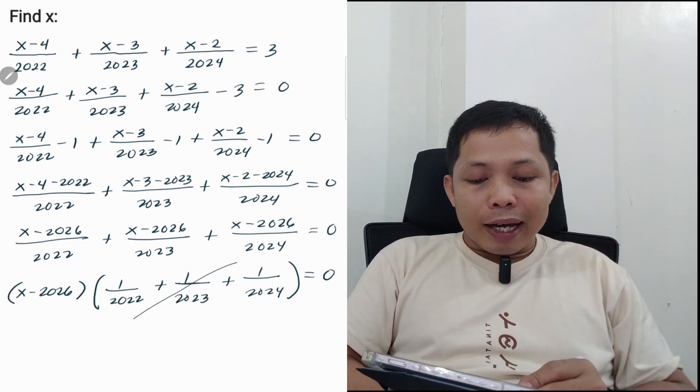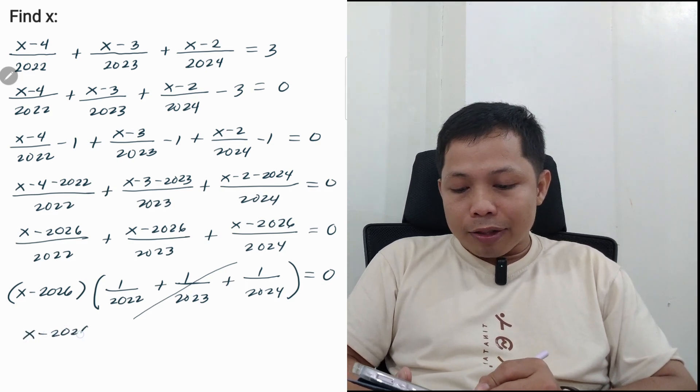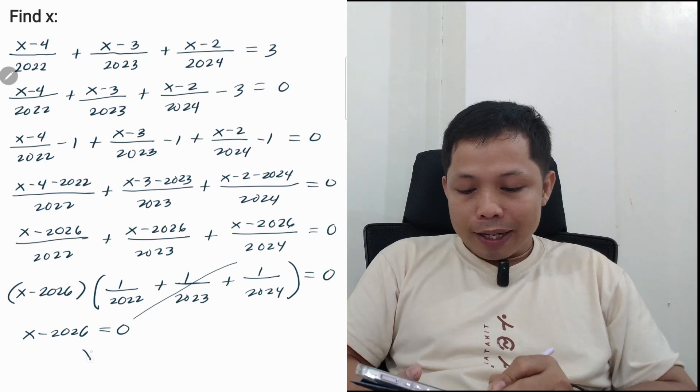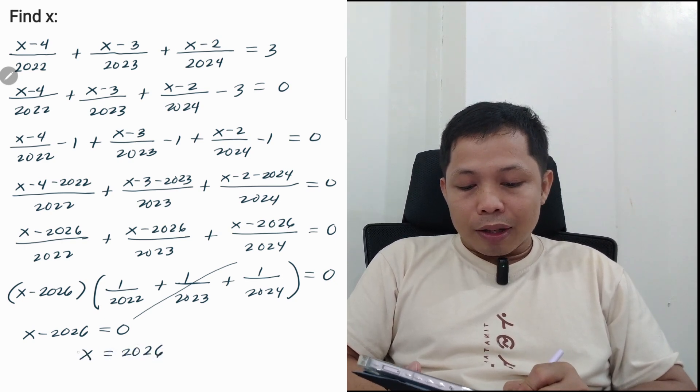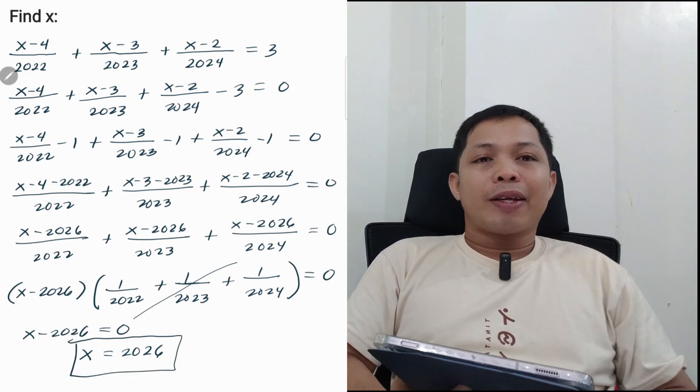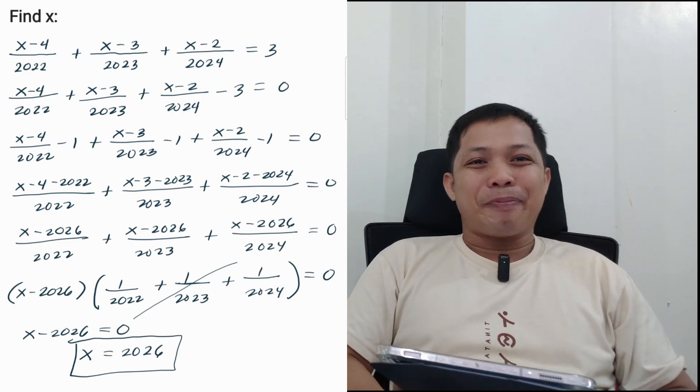And of course, this x - 2026 is equated to 0. So solving for x, we have 2026. So the value of x that will satisfy this equation is 2026.